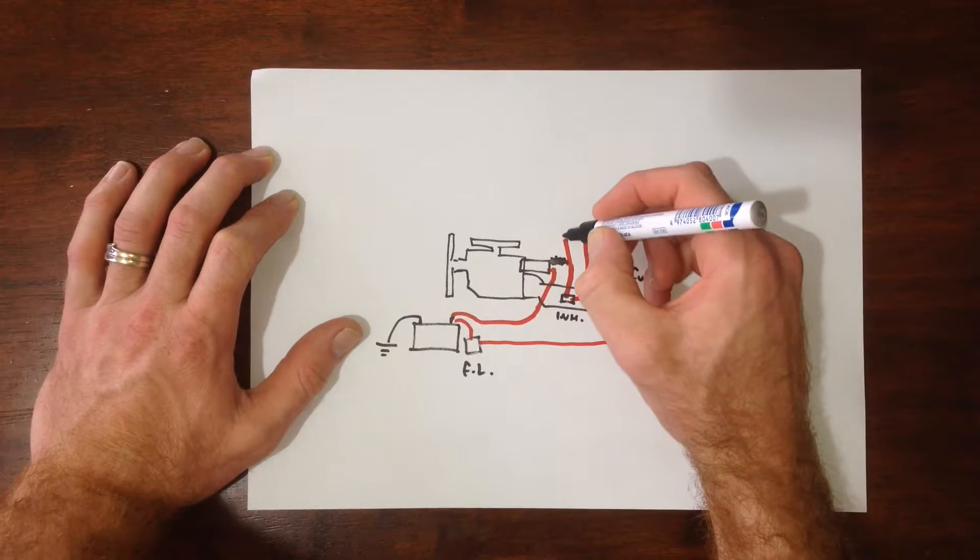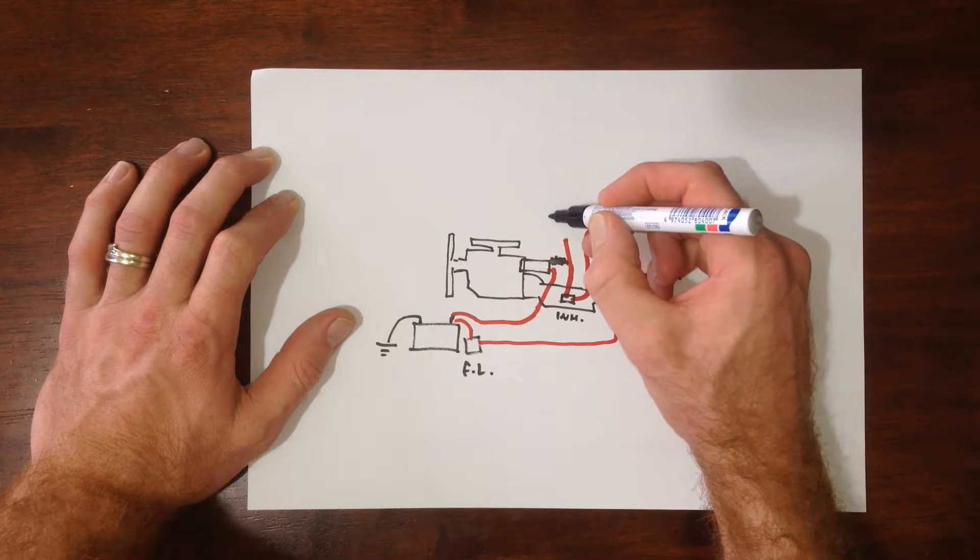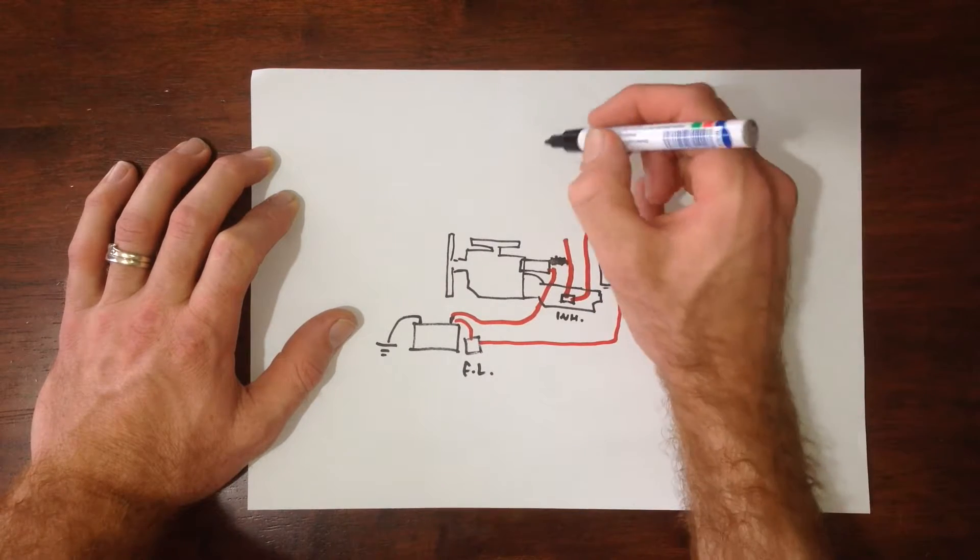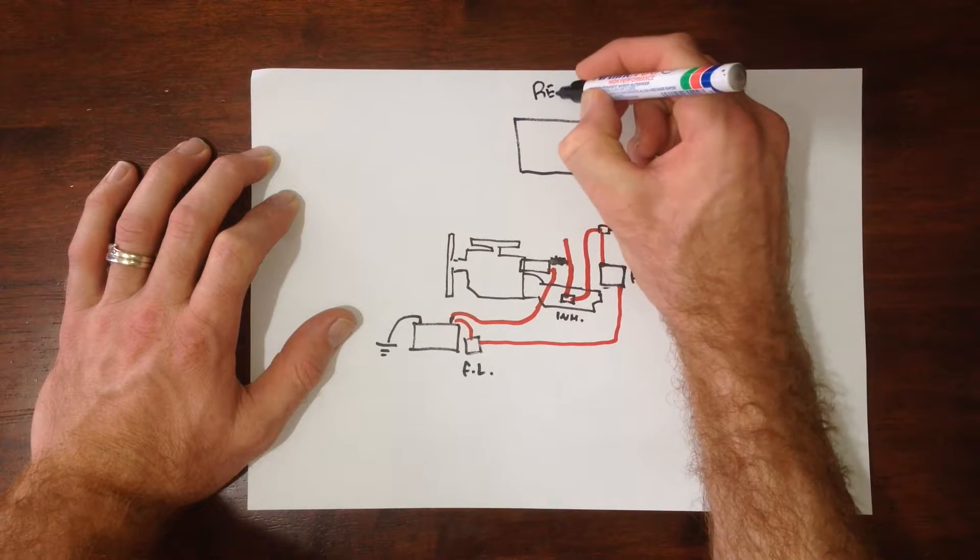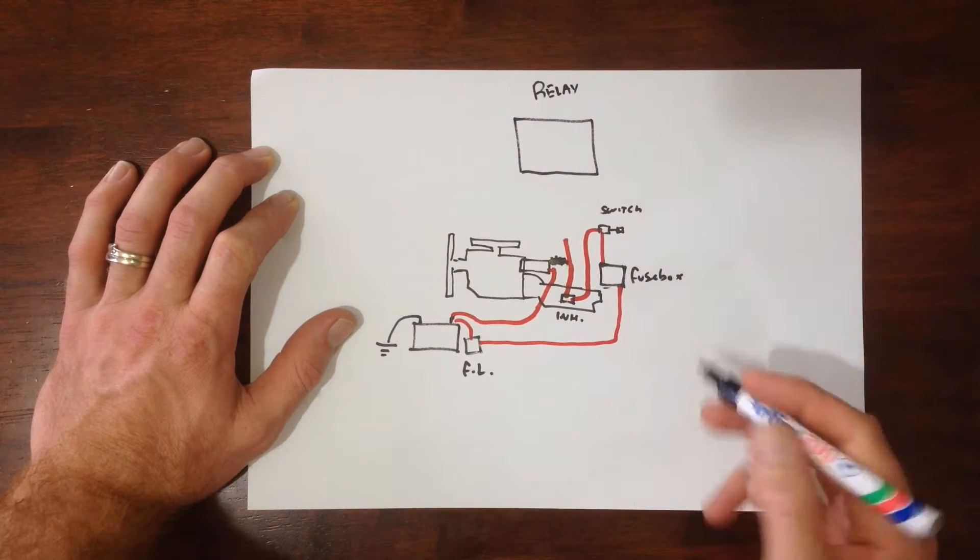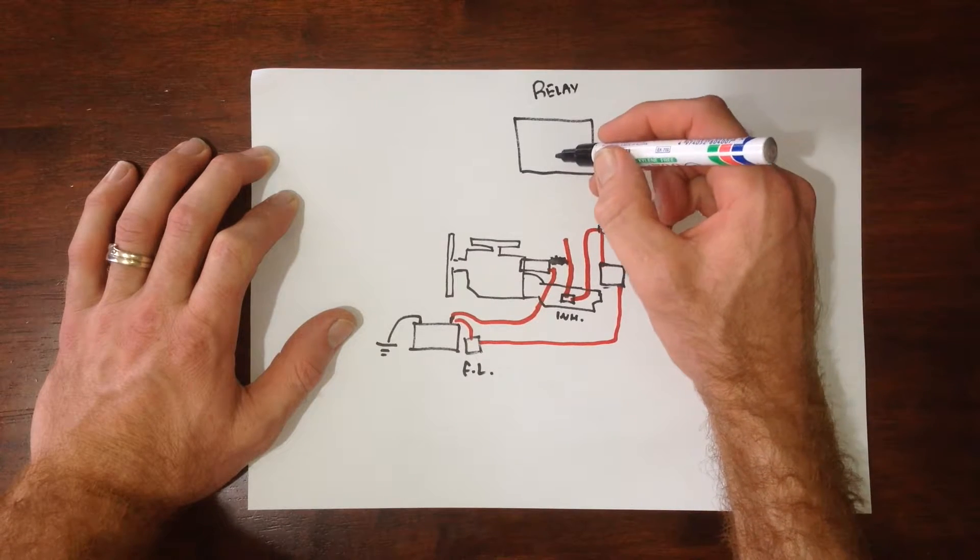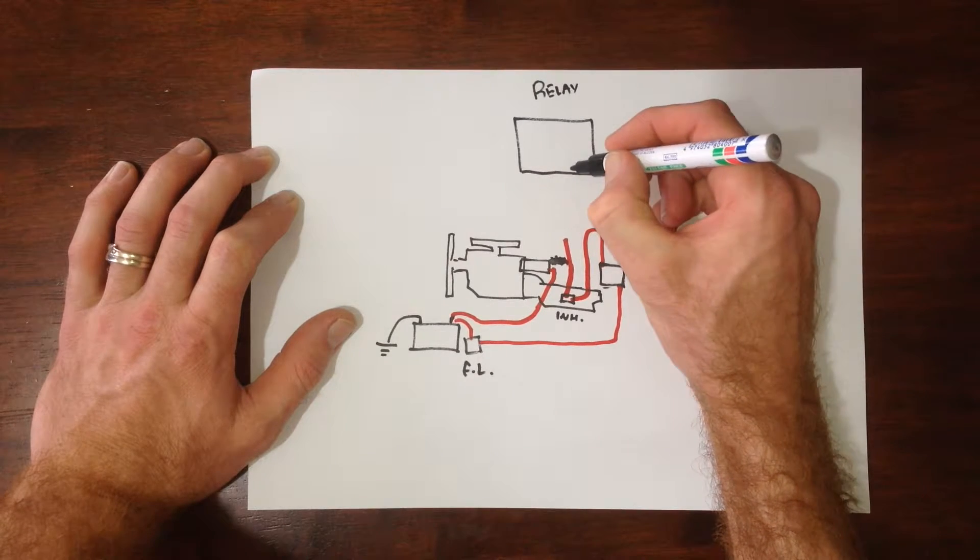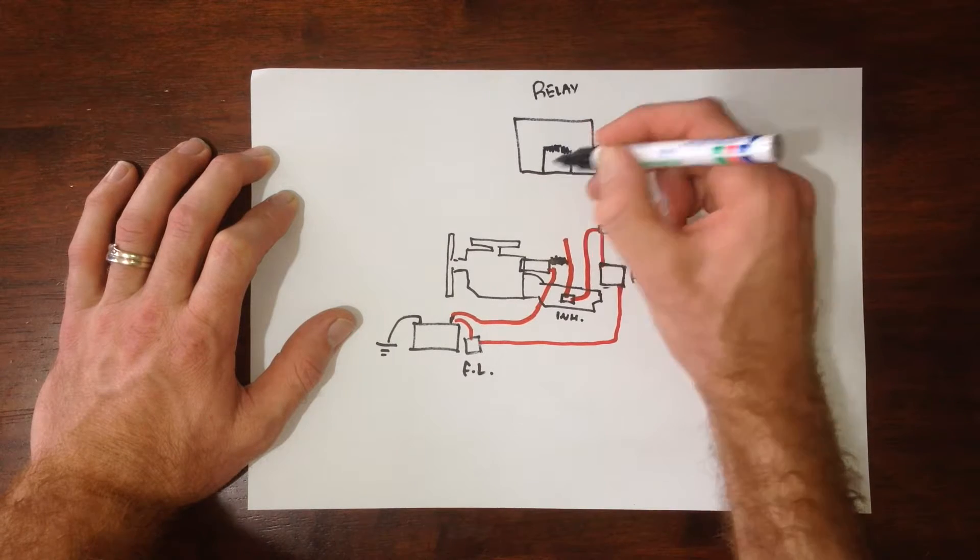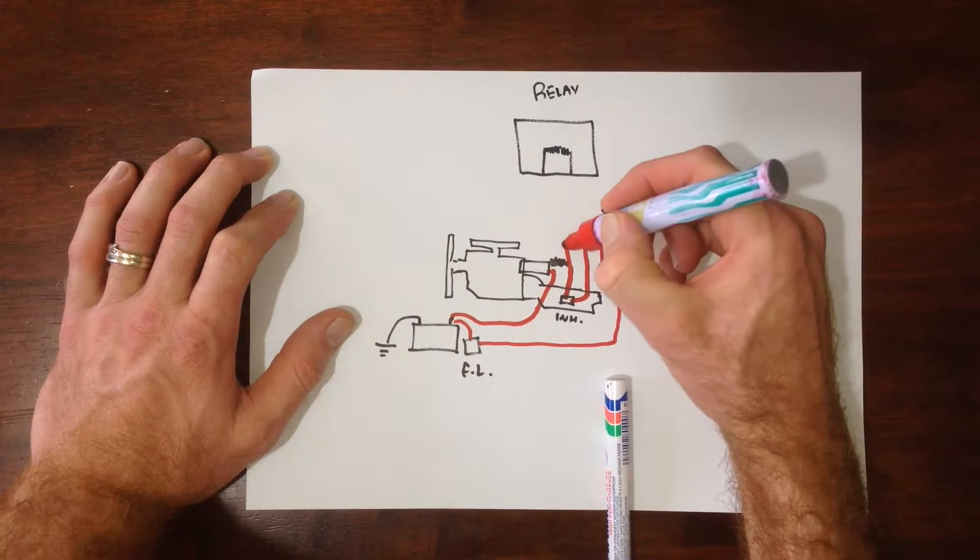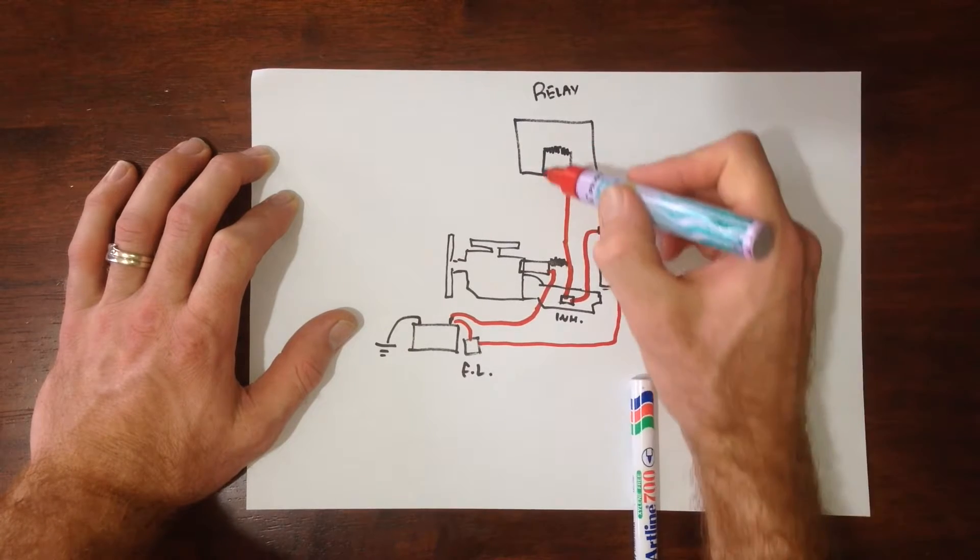And this goes to our relay, which I'm going to draw big up here. Okay. This is our relay. Like this. This cable is going to go to the coil of the relay. Like that.